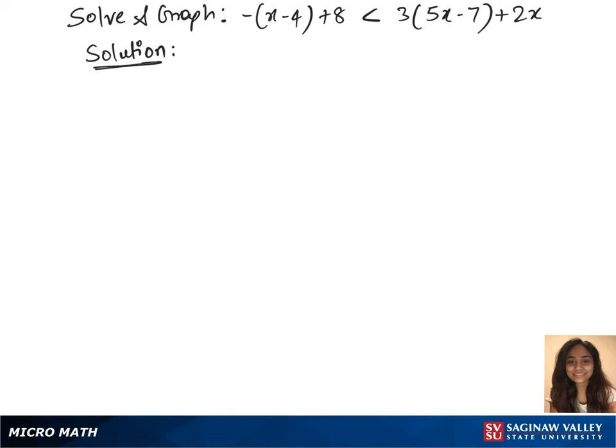To solve this inequality, we'll first use the distributive rule on both sides to remove those parentheses. So that's minus x plus 4 plus 8 on the left, less than 3 times 5x is 15x minus 7 times 3 is 21 plus 2x.